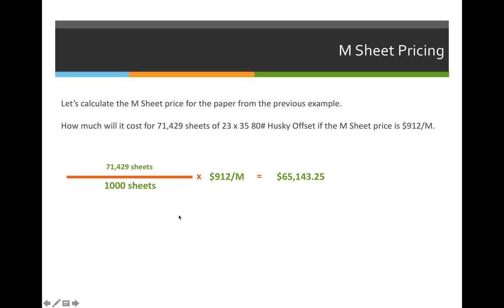Let's take a look at one of our previous examples. We calculated that we needed 71,429 sheets of 23 by 35 inch, 80-pound Husky offset. If the M sheet pricing is $912 per M, or per 1,000 sheets, our formula would be the number of sheets needed — not items, but press size sheets — 71,429 sheets divided by 1,000. When you divide by 1,000, you move the decimal places three spots to the left, so we multiply 71.429 times $912, the price per 1,000 sheets of paper. When you multiply 71.429 times 912, the total cost of the paper is $65,143.25.